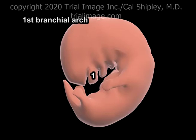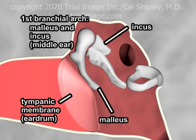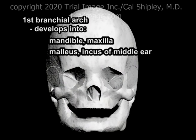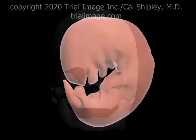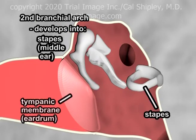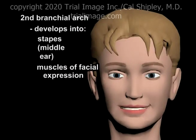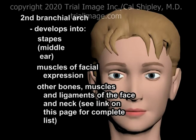The first branchial arch develops into the maxilla and mandible, as well as the malleus and incus — two of the three bones comprising the middle ear — and a number of other facial bones, muscles and ligaments. The second branchial arch develops into the stapes, the third of the three bones in the middle ear, as well as the muscles of facial expression.